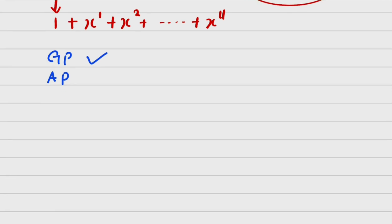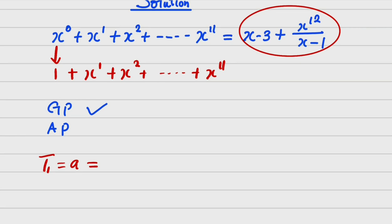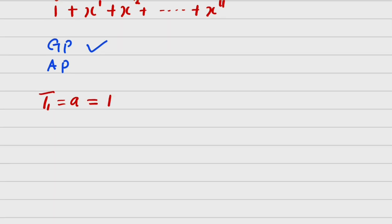Now if it is a GP, then we need some things in a GP. The first thing that we need is we are going to need our T1 which is our first term. Now in this case, first term is A and our first term is 1. So we have it as 1.